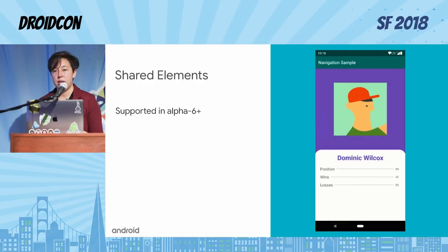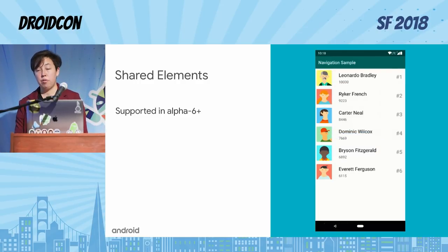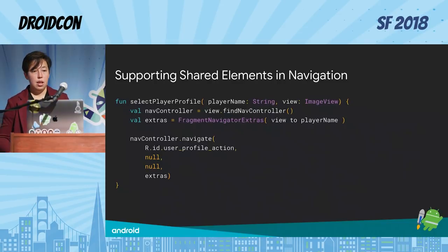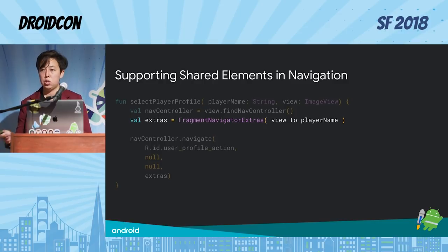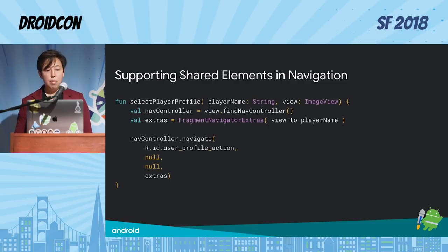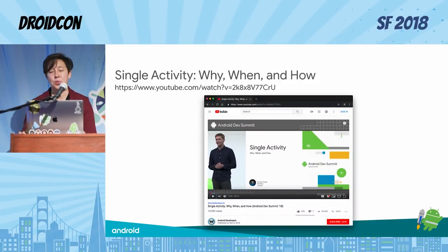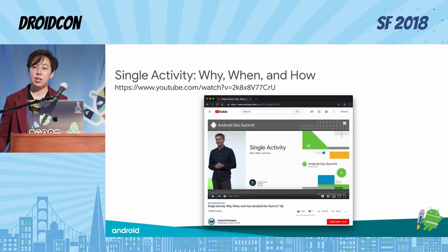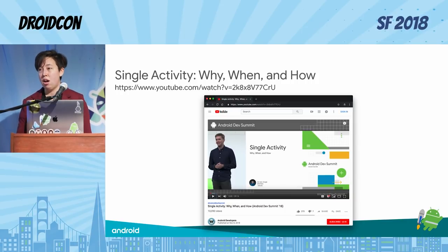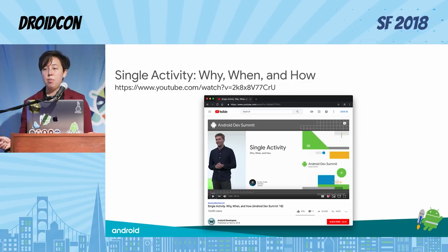One sticking point for folks not adopting a single activity was that up until alpha 6, shared element transitions weren't supported — but in alpha 6 and beyond, shared element transitions are supported. You can make a FragmentNavigatorExtras object that links up the two different views for your shared element and pass it in as an extra. All the other complicated bits of making a shared element transaction work are still complicated, but now you can at least actually do it. If you want a good argument for single activity, Ian's talk from Android Dev Summit about a week and a half ago is worth checking out.